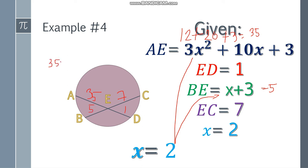So let's check. 35 times 1 is equal to 5 times 7. 35 times 1 is 35, and 5 times 7 is also 35. So we got the correct answer.